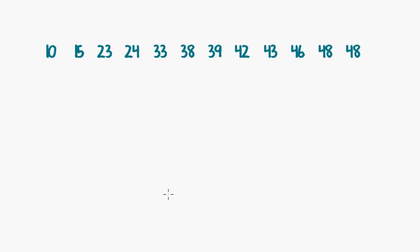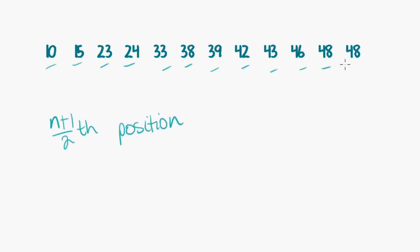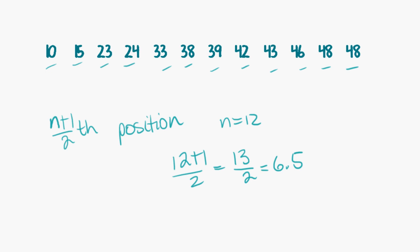What about this data set? Let's find the median using both methods. Using n plus 1 over 2, first we need to know n — there are 12 data points. So 12 plus 1 over 2 is 13 over 2, which is 6.5. So we find the sixth-and-a-half position going through the data: positions 1, 2, 3, 4, 5, 6 — the 6.5th position is halfway between the 6th and 7th values. Our median would be halfway between 38 and 39, which is 38.5.